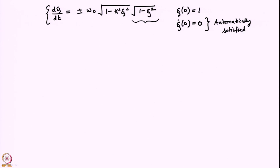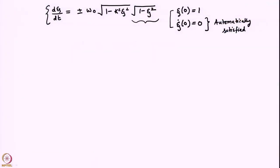This is a first-order differential equation, and we cannot satisfy two initial conditions with one constant of integration. The zero-velocity condition is automatically taken care of, and we only need to use the remaining condition ζ(0) = 1 to determine the unknown constant of integration. That is entirely consistent.